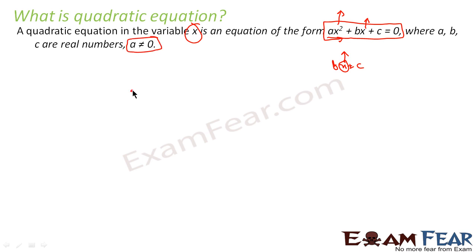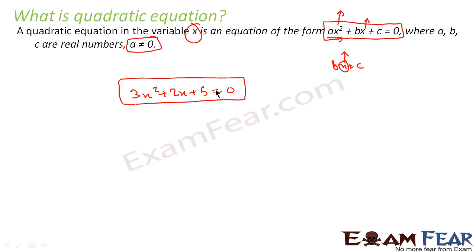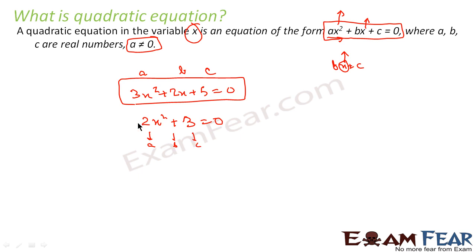Let me take some examples. For example, 3x² + 2x + 5 = 0 is a quadratic equation because it is of the form ax² + bx + c, where a = 3, b = 2, and c = 5, and a is not zero. If I say 2x² + 3 = 0, this is also a quadratic equation where a = 2, b = 0, and c = 3. But if I say 2x + 3 = 0, here a is zero, so this is not a quadratic equation.